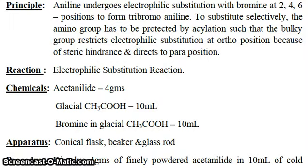The chemicals required for synthesis of para-bromoacetanilide are: acetanilide 4 grams, glacial acetic acid 10 ml, and bromine in glacial acetic acid 10 ml.